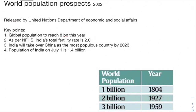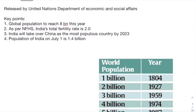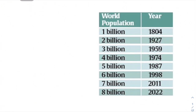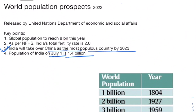Moving forward, the first key point from World Population Prospects: the world has reached 8 billion population in 2022, and India has reached 1.4 billion as of July 1st. As the report says, India will overtake China as the most populous country by 2023, making India the most populous country in the world.